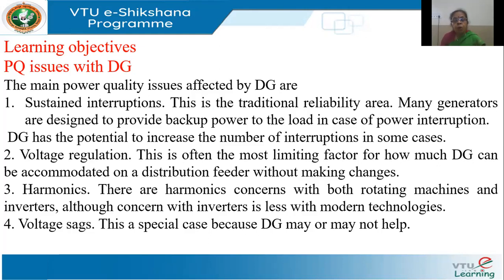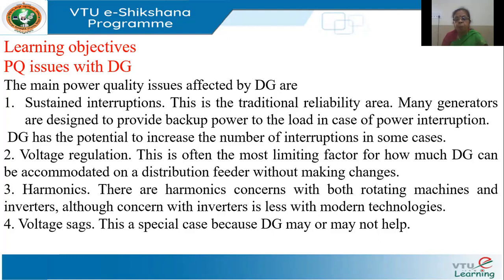We are going to see how distributed generation is going to have an impact on normally occurring PQ disturbances. The first disturbance we will look at is sustained interruptions. An interruption is when the load is unserved or there is no power to the load. This falls into the area of reliability — if there are interruptions, my supply becomes unreliable. Many utilities are provided with backup to take over the load when there is a power interruption. Now, do DGs actually help to reduce the interruption? We can't say, because the DG may contribute to faults and may actually increase the number of interruptions in some cases.